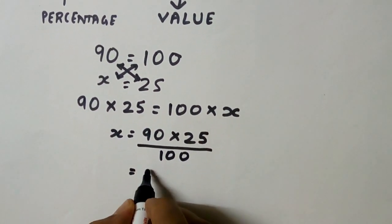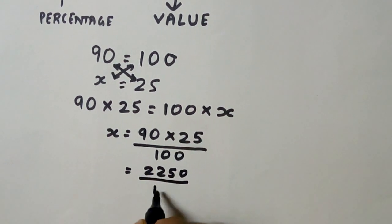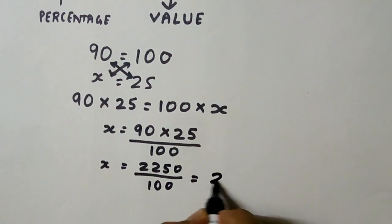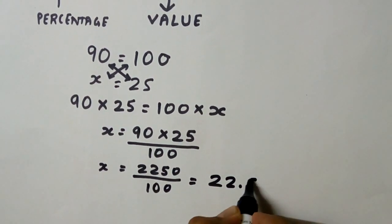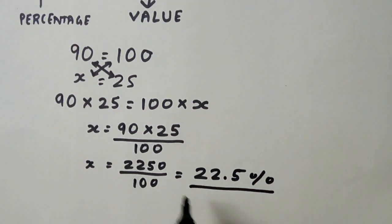If we solve it further, we will get it as 2250 divided by 100, and further we get it as 22.5%. That's the answer of today's question.